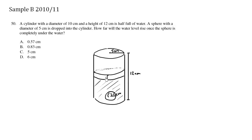The overall shape is a cylinder. How far will the water level rise once the sphere is completely under the water? The question is: what is this H value — the change in the water level? To solve this, we consider an imaginary mini yellow cylinder representing the risen water volume, which has the same volume as the sphere that was dropped in.